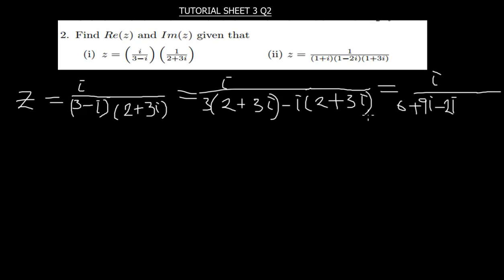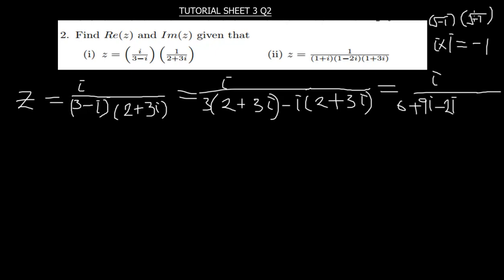And then negative i times 3i — remember what we said in previous tutorials: i times i equals negative 1, because i is just the square root of negative 1, and the square root of negative 1 times the square root of negative 1 gives negative 1. So negative i times i gives positive 1, because negative times negative equals positive.